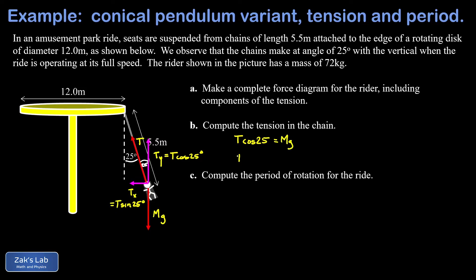We find that T is going to be mg over the cosine of the angle. Now we can plug our numbers in. The rider has a mass of 72 kilograms, we'll use 9.8 for g, and this is divided by the cosine of 25 degrees. When I run the numbers on this I get 778.5 newtons, just keeping a little extra precision. If we round to our conventional three significant digits, I can write my answer as 779 newtons.